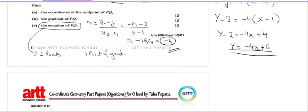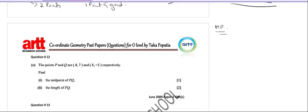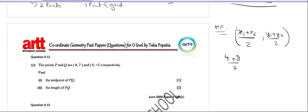Moving on to question number 12, which is from the June 2009 CIE exam papers. It says there are two points P(4, 7) and Q(8, -3), and you have to find the midpoint. Using the midpoint formula (x1 + x2)/2, (y1 + y2)/2: (4 + 8)/2 = 12/2 = 6, and (7 - 3)/2 = 4/2 = 2. So the midpoint is (6, 2).